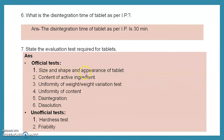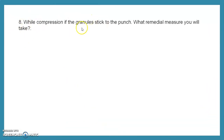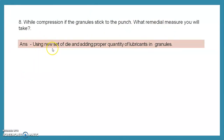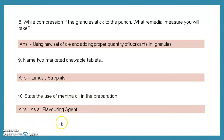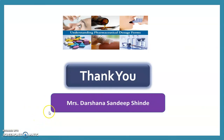Question 6: what is the disintegration time of tablet as per IP? Answer: 30 minutes. Question 7: state the evaluation tests for tablets. Official tests: size, shape, and appearance; content of active ingredient; uniformity of weight; uniformity of content; disintegration test; dissolution test. Unofficial tests: hardness test and friability test. Question 8: while compressing, if granules stick to the punch, what remedial measures are taken? Answer: add a proper quantity of lubricant to the punches; if problem persists, use a new set of die and punch. Question 9: name two marketed chewable tablets. Answer: Limsy, Strepsils. Question 10: what is the use of menthol in the preparation? Answer: menthol is used as a flavoring agent. Thank you very much for attending this practical session.